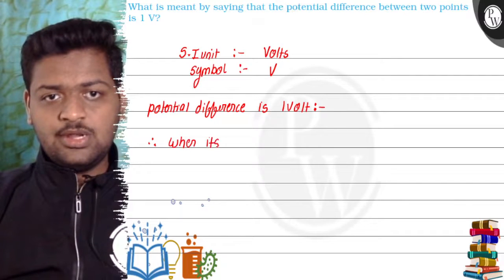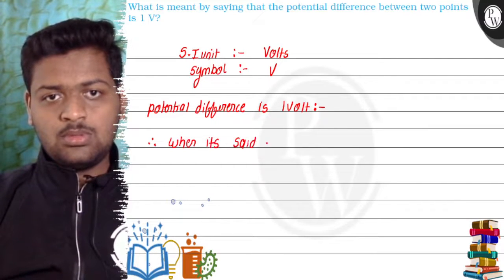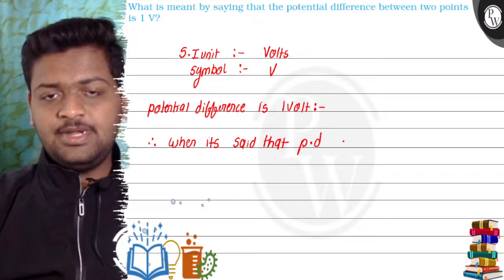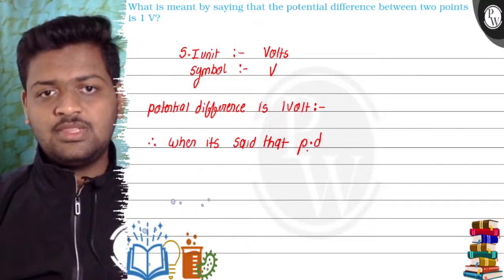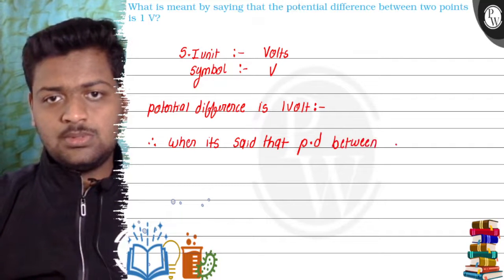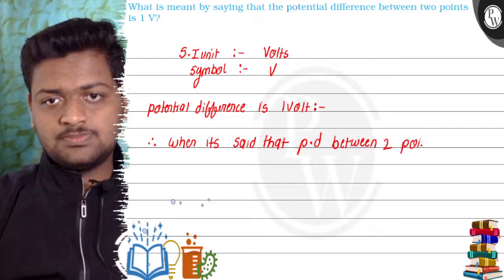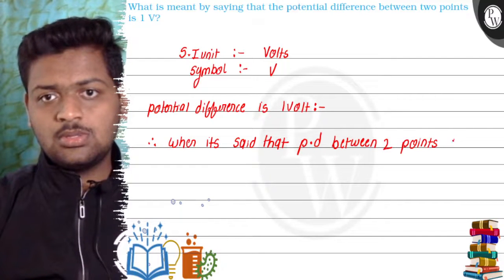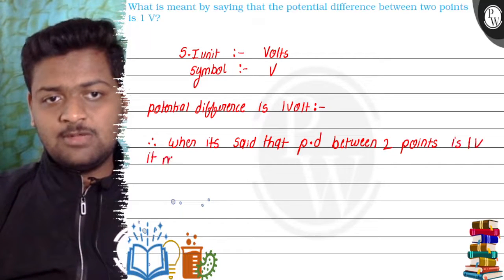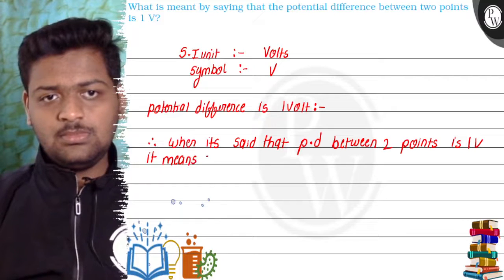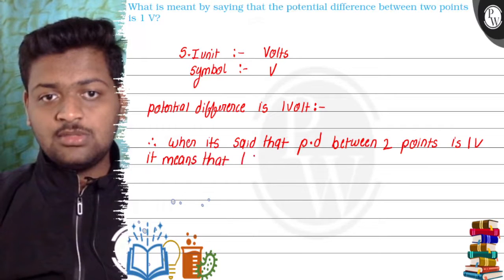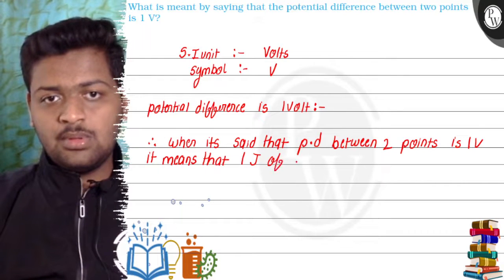When it is said that potential difference (PD) between two points is one volt, it means that - iska matlab hai - one joule of work...